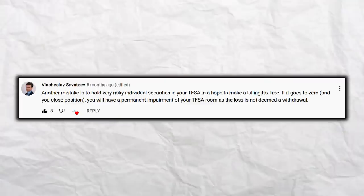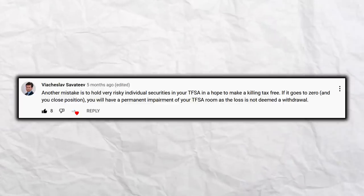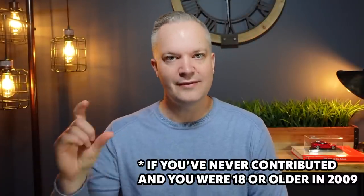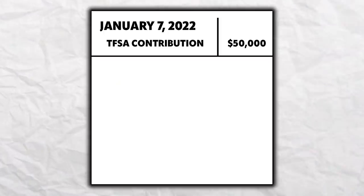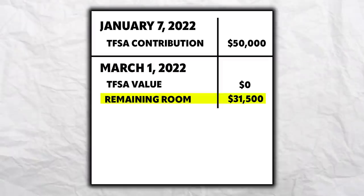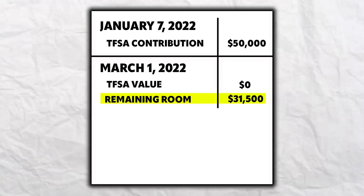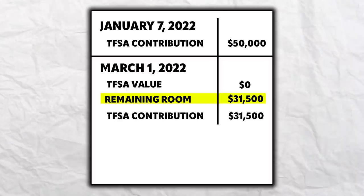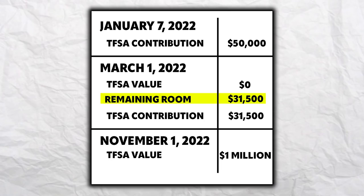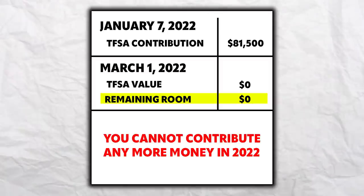The next comment is from Vyacheslav Savitiv: another mistake is to hold very risky individual securities in your TFSA. If it goes to zero, you will have a permanent impairment of your TFSA room, as the loss is not deemed a withdrawal. Right now in 2022, your TFSA room is $81,500. If you put $50,000 in and invested in a high-risk stock that went to zero, you still have $31,500 you can put in. If you then put that into a stock that grew to a million dollars, you still have a million-dollar TFSA. Your $50,000 going to zero means that contribution room is lost, but you can gain it back through other investments. If you put the whole $81,500 into a stock and it went to zero, you'd have to wait until 2023, get your new $6,000 contribution room, and start building it up.